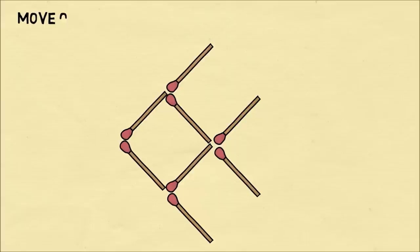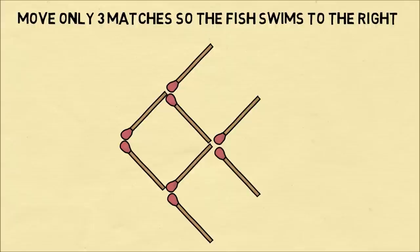In the first puzzle, we'll take eight matches to create a stick figure fish which has its head facing to the left. The puzzle is, can you move only three of the matches so that the fish swims to the right? In other words, you want the same shape at the end, but you want the head to be looking to the right side.